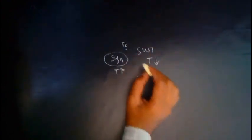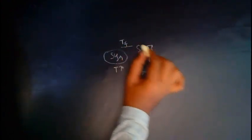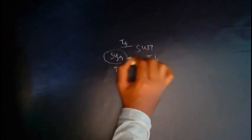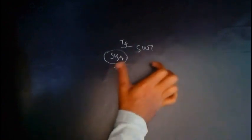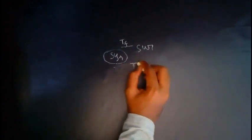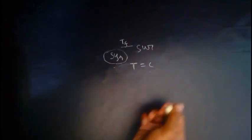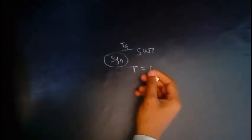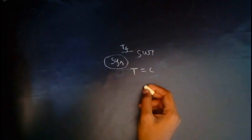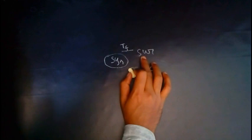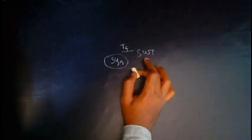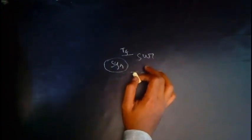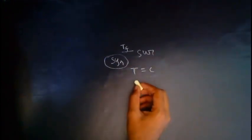At equilibrium temperature Tf, both the system and surrounding will be at the same temperature, so the temperature becomes constant. At this condition, when the system and surrounding temperature becomes equal, no heat transfer will take place, and there will not be any work transfer either.